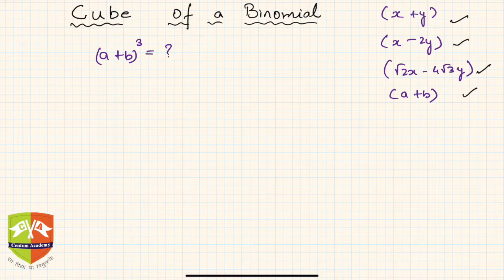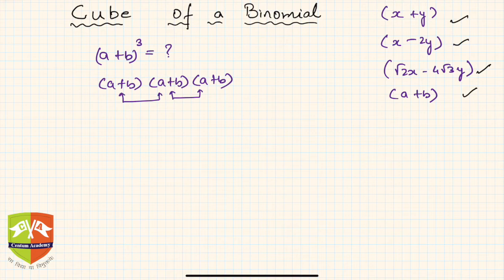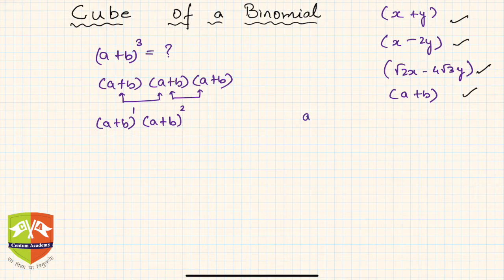If you don't know any identities, fundamentally you could multiply (a + b) by (a + b) by another (a + b) and expand step by step. But since we already have some knowledge of identities, (a + b)³ can be written as (a + b)¹ × (a + b)². This works because aᵐ × aⁿ = aᵐ⁺ⁿ by our knowledge of exponents.